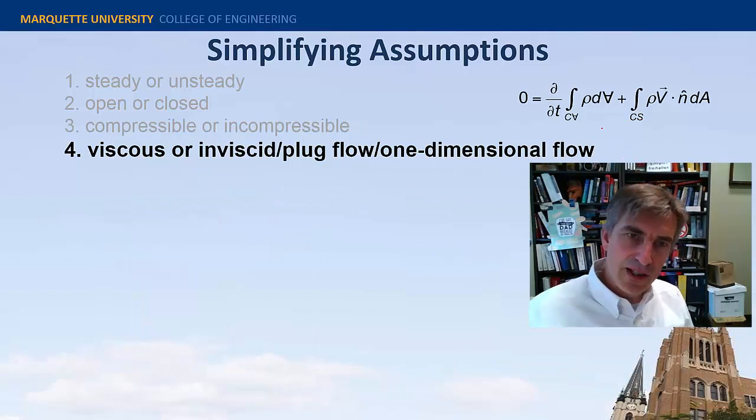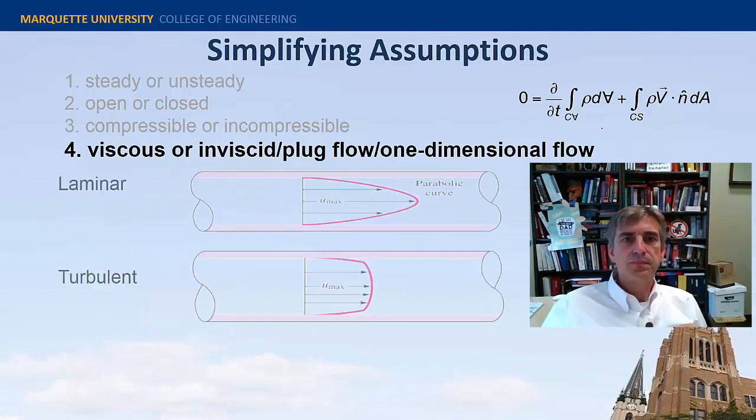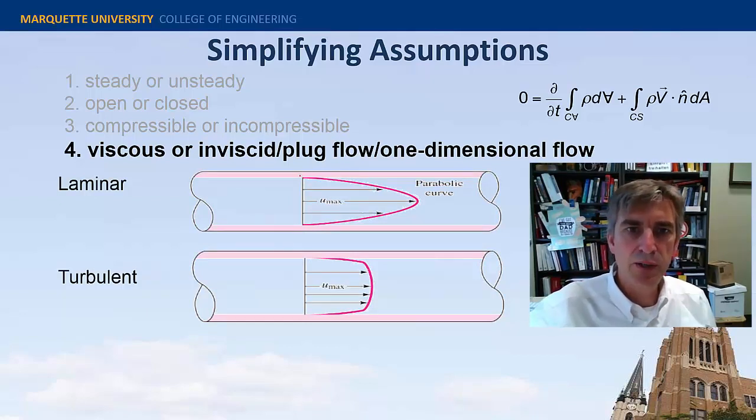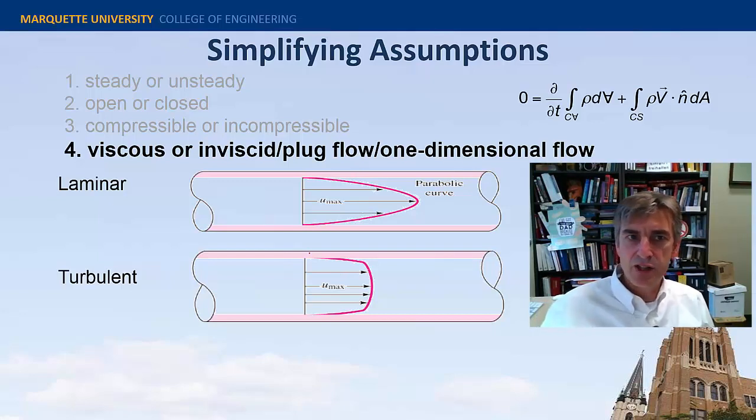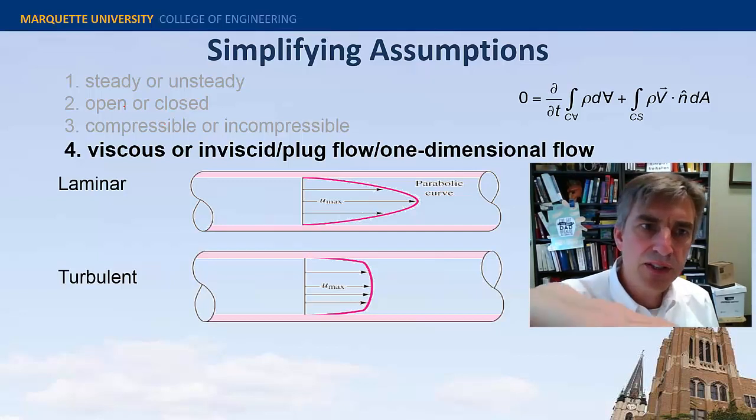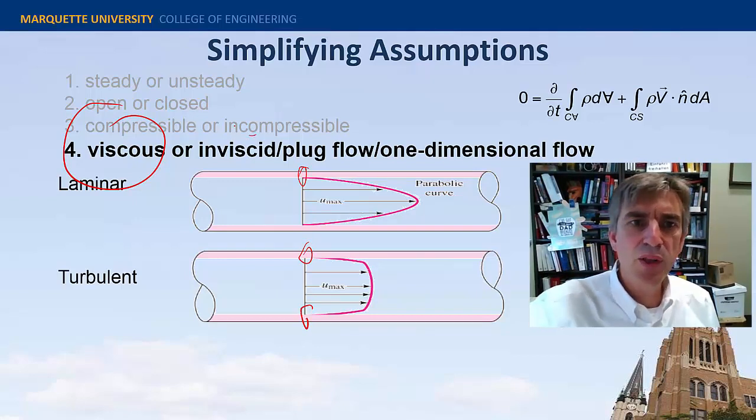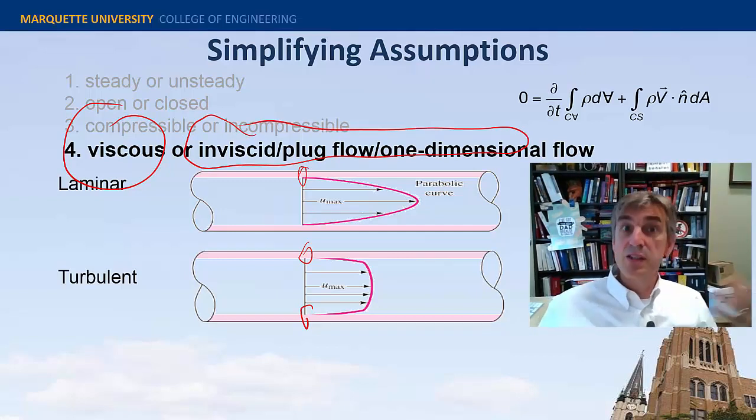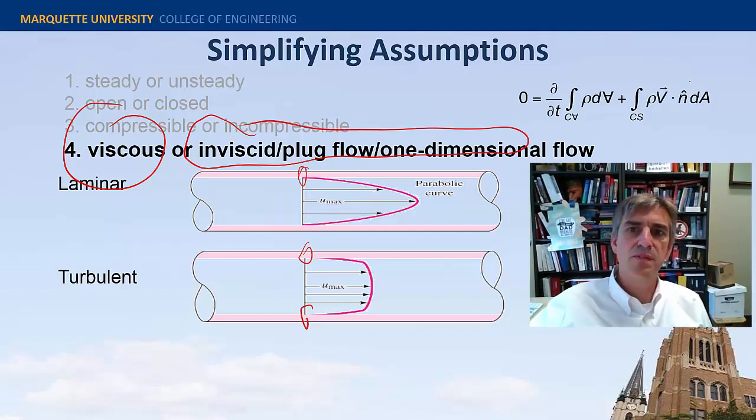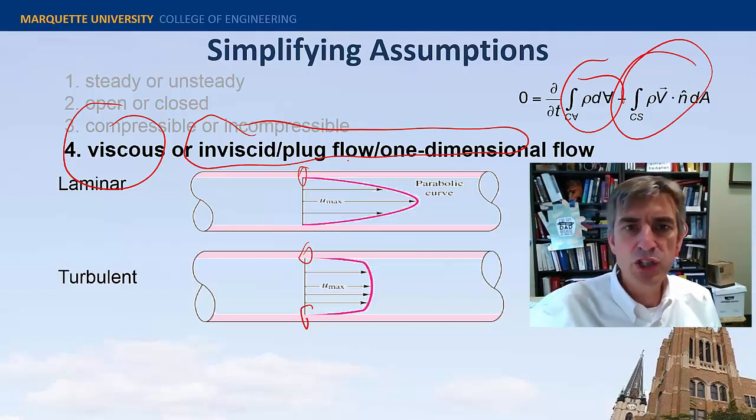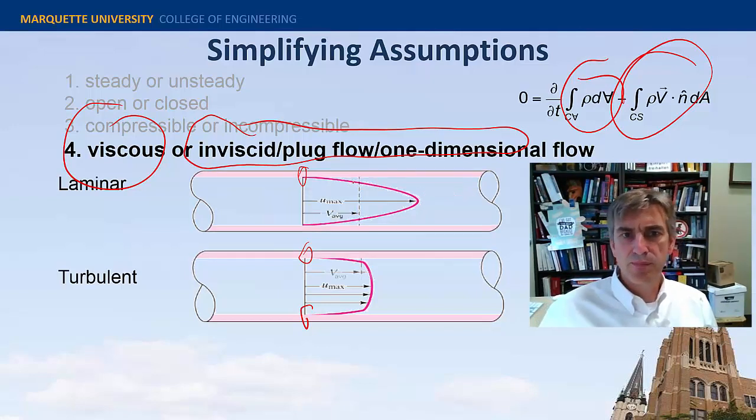All right, what about this last one, viscid or inviscid? Here are some real velocity profiles. This is the average profile in a laminar flow. It's very long and skinny, and the average profile in a turbulent flow tends to be a little fat and squattier. These are viscous flows. They're satisfying the no-slip boundary condition. This is reality. This is what the average flows look like in a pipe. This inviscid plug flow, this is total fiction. This doesn't exist, but it's a great assumption, because it helps us simplify these integrals.